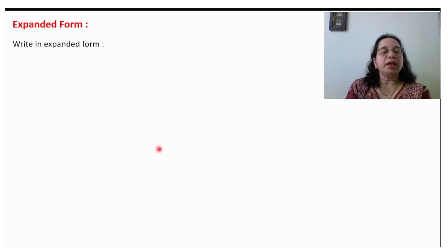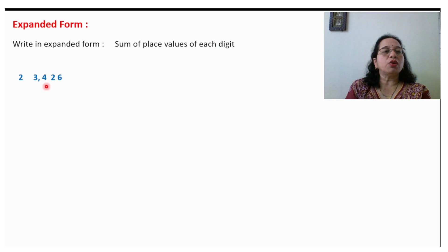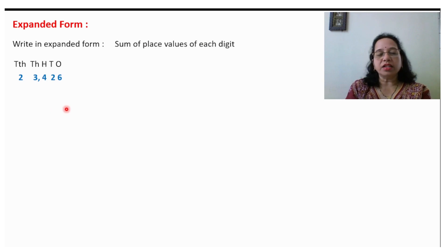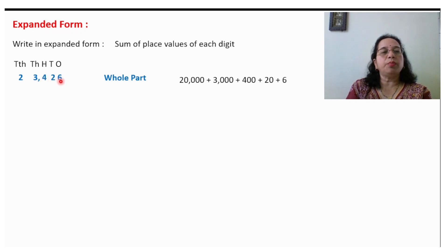Expanded form. Write in the expanded form. What is the expanded form? The sum of the place values of each digit is known as the expanded form. Let us take the example 23,426 — there is no decimal part. Write down the places. So the expanded form is 20,000 plus 3,000 plus 400 plus 20 plus 6.